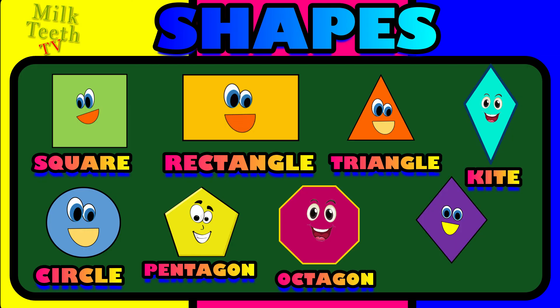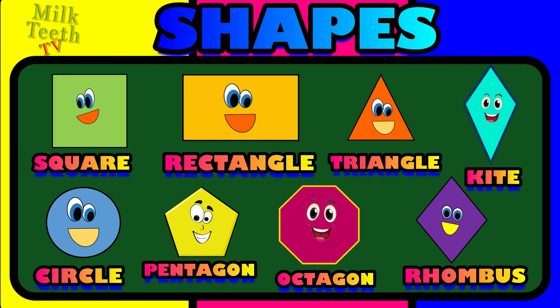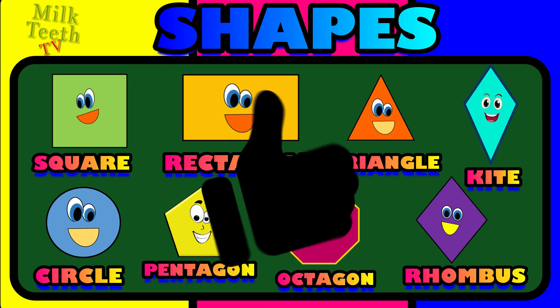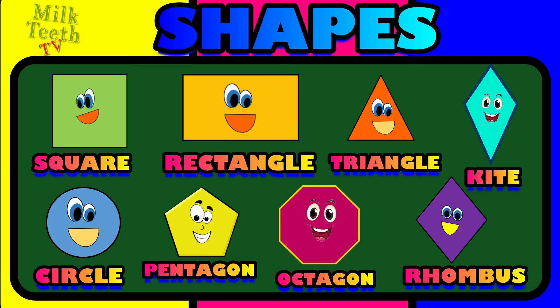Square, rectangle, triangle, kite, circle, pentagon, octagon, and rhombus — all are 2D or flat shapes. Thank you so much for watching. Don't forget to give this video a thumbs up and also subscribe to this channel for future updates. Always stay tuned for more such videos. I'll see you next time, bye bye.